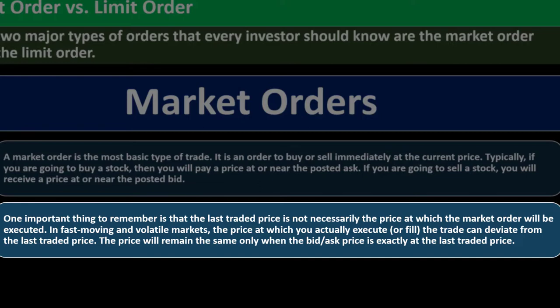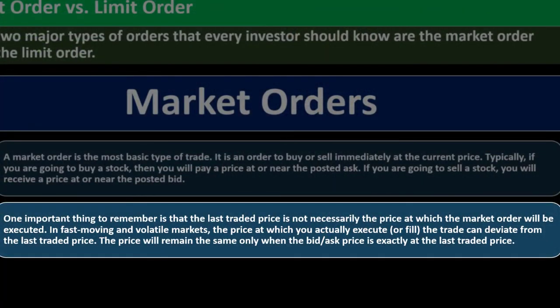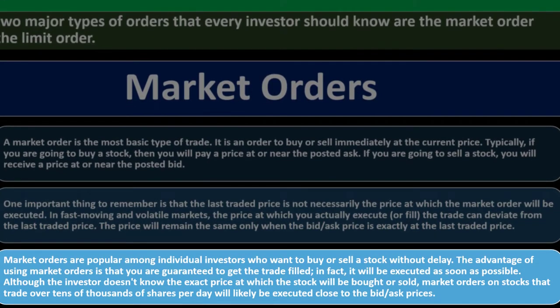In fast-moving and volatile markets, the price at which you actually execute or fill the trade can deviate from the last traded price. Even in a digital system, it takes some time to initiate the trade because trades are happening all the time and the market price fluctuates. Market orders are popular among individual investors who want to buy or sell a stock without delay — you are guaranteed to get the trade filled as soon as possible, although the exact price is not known.